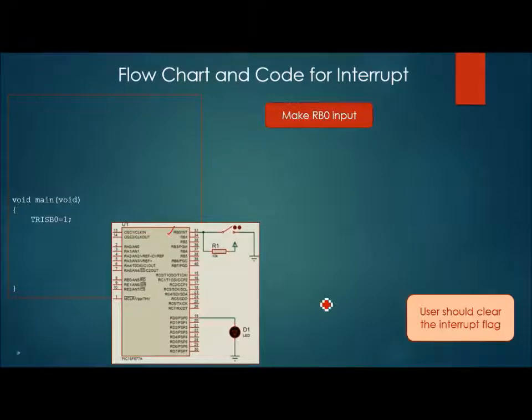Now RD0 needs to be configured as output. For this TRISD register is used. Here we have written TRISD equals 0, it will set all the pins of port D as output. Here we are going to use pin RD0, hence it gets set as the output. All other pins are also set as output, but we are not going to use them in this example.